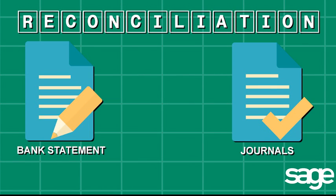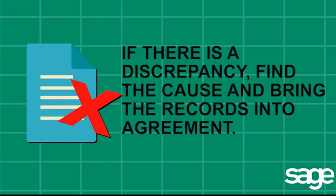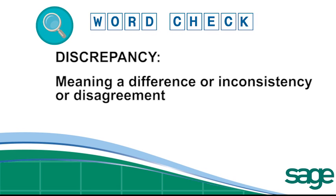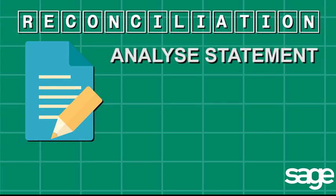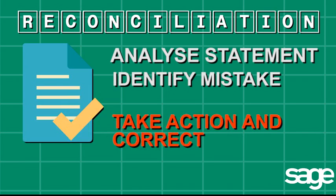During the process of bank reconciliation, we match and compare transactions between these documents and then, if there's a discrepancy, we find the cause and bring the records into agreement. In today's lesson, we'll remind you of the main reasons for discrepancies and revise what should be done in each case in order to bring the accounts into balance.